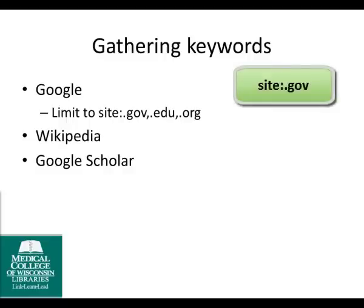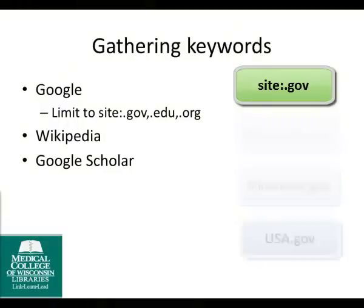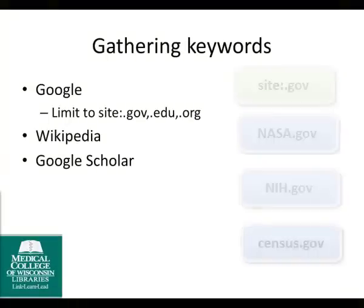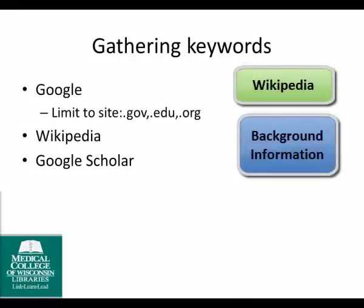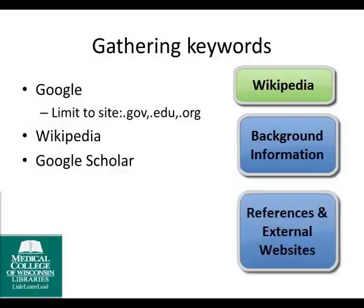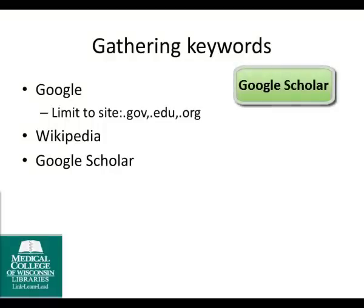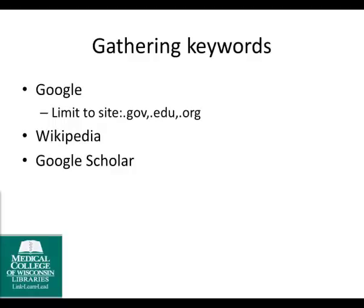Limiting to .gov is a great way to narrow down to more relevant results. This captures information from state, local, and national government websites, as well as sites like NASA, PubMed, and the Census, and other government agencies which produce research and data. Wikipedia is also among the first stops for me. I use this site to get background information and to find links for references and external websites. Finally, Google Scholar is a place to search scholarly materials like books, articles, and patents. I will demonstrate searches in all of these locations using the term intubation.